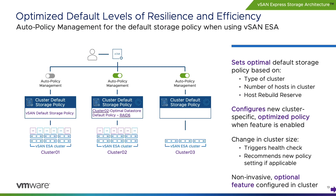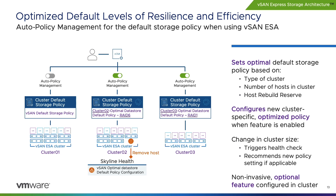When the cluster feature is enabled, it will create and assign a default storage policy specific to the cluster. Based on the type and size of the cluster, it will determine the ideal level of failures to tolerate and data placement scheme. The Skyline Health in vSAN will monitor and alert the administrator if the default storage policy is ideal or suboptimal, and guide the user to adjust the policy for the cluster size. As the cluster size changes, it will continually monitor and provide new recommendations to ensure the optimal settings are in place, helping ESA clusters stay configured in the most resilient and space-efficient way.